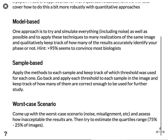The second approach is sample-based, where you apply the methods to each sample, manually check that it worked, and keep track of what thresholds were used. You can then apply those thresholds to other images to see that it's still correct enough. The last approach is a worst-case scenario assessment — come up with a worst-case scenario in terms of noise, misalignment, and image quality, and assess how unacceptable the results are and how easy it is for you to detect that this has happened.